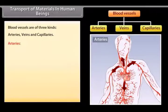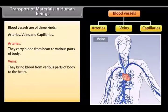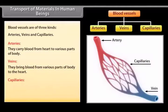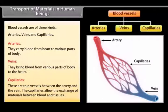Arteries carry blood from heart to various parts of the body. Veins bring blood from various parts of the body to the heart. Capillaries are thin vessels between the artery and the vein. The capillaries allow the exchange of materials between blood and tissues.